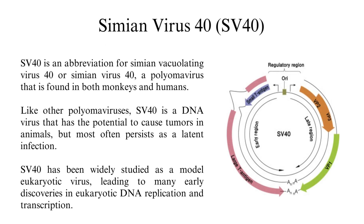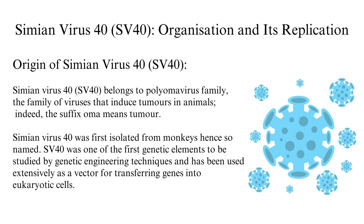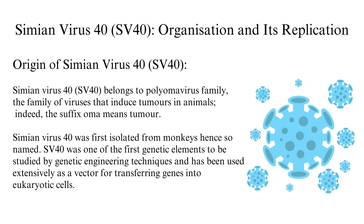Simian virus 40, SV40, is an abbreviation for simian vacuolating virus 40 or simian virus 40, a polyomavirus found in both monkeys and humans. Like other polyomaviruses, SV40 is a DNA virus that has the potential to cause tumors in animals but most often persists as a latent infection. SV40 has been widely studied as a model eukaryotic virus, leading to many early discoveries in eukaryotic DNA replication and transcription.